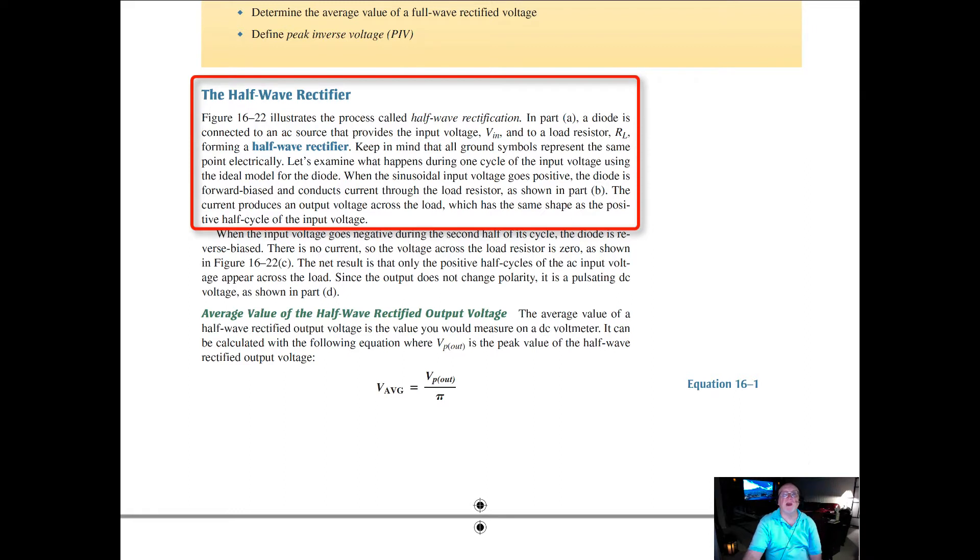Let's examine what happens during one cycle of the input voltage using the ideal model for the diode. When the sinusoidal input voltage goes positive, the diode is forward biased and conducts current through the load resistor as shown in part B.